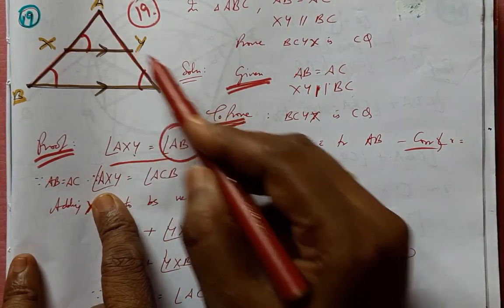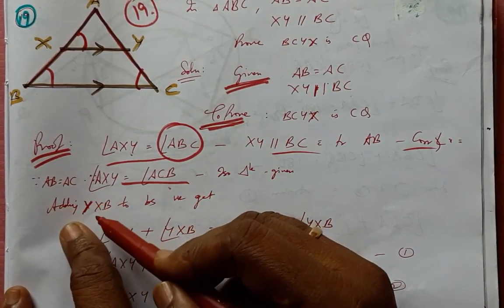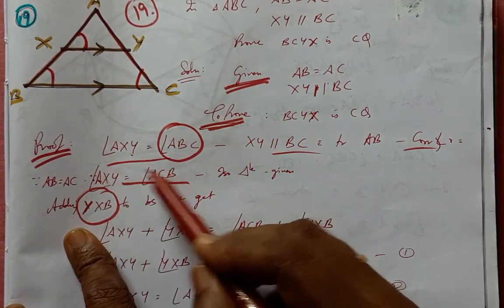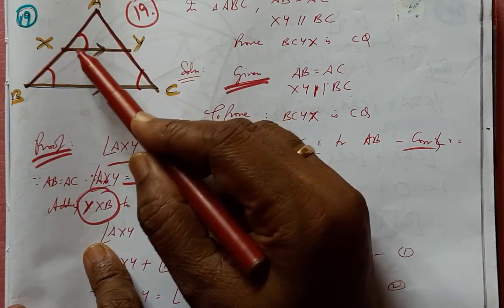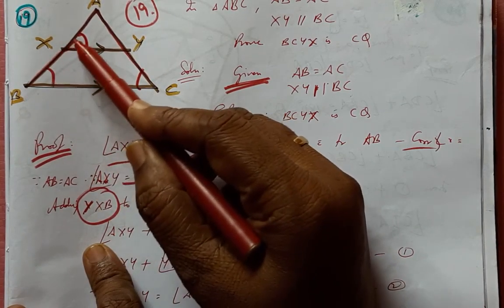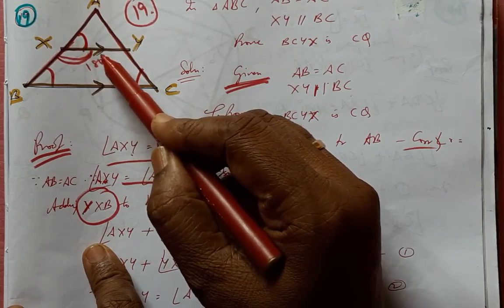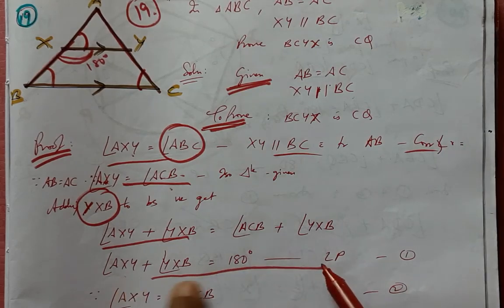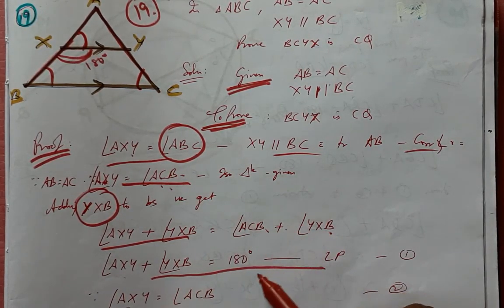If we add YXB to both sides, we have a linear pair operating here. These two form a linear pair. Therefore, adding YXB to the right-hand side as well.